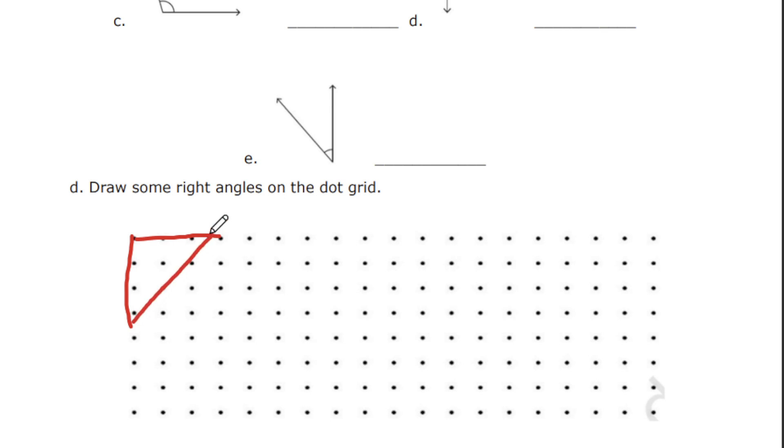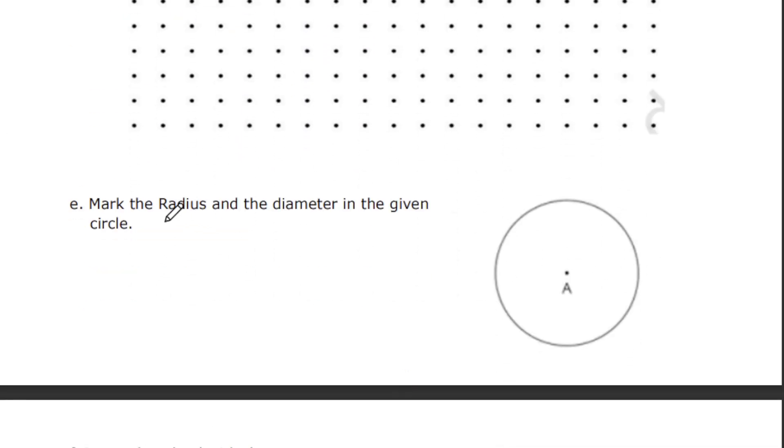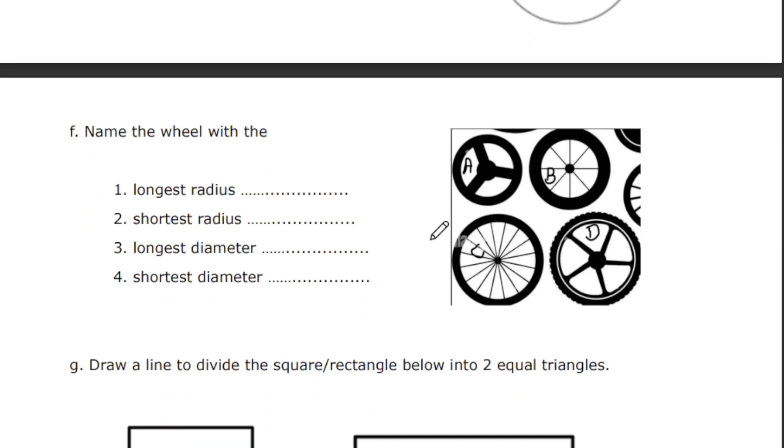This is an example I am doing, students. But while showing worksheet, I will not tell you anything because worksheet is very important that you have to complete it. Next, mark the radius and diameter in the given circle. You have to mark one line for radius and another line for diameter.